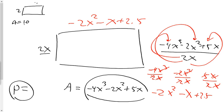And now that we have it, we can solve the perimeter. Perimeter of a rectangle is made up of two lengths, or in this case, two 2x's, and two of these, or 2 times negative 2x squared minus x plus 2.5.